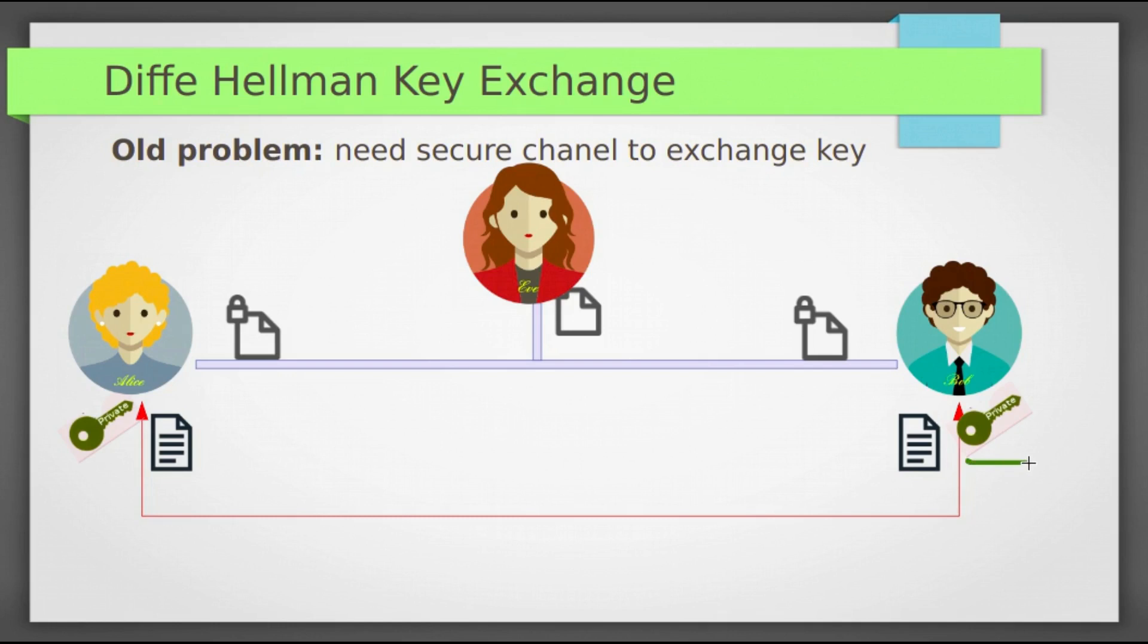Diffie-Hellman key exchange is a method. It allows two parties to agree on shared secret by exchanging messages over insecure channel even if they have no common secret. It is published in 1976 by Diffie and Hellman, inspired by Merkle's puzzle. This is the first publicly known work that proposes the idea of private key and corresponding public key.